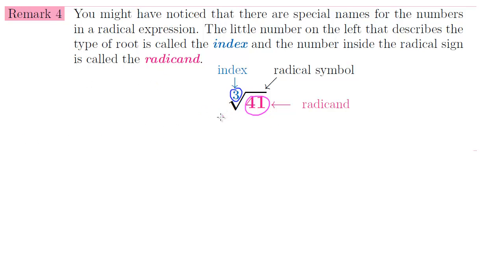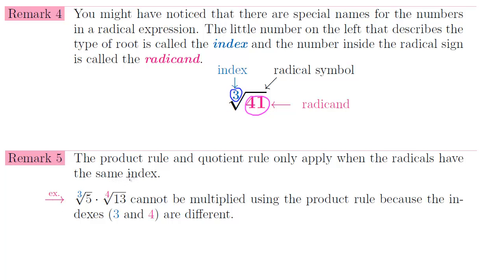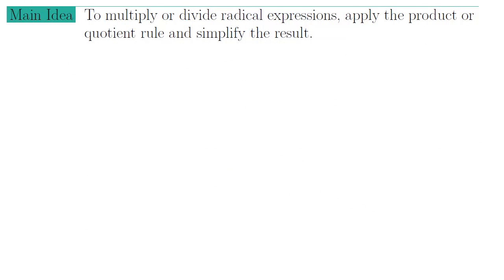There is an important point about the product and quotient rules: they only apply when you have the same index on your radicals. For example, you cannot multiply the cube root of 5 and the fourth root of 13 because they don't have the same index. The main idea for this topic is: to multiply or divide radical expressions, apply the product or quotient rule and then simplify the result. In order to apply these rules you must have the same index, and your final answer should always be in simplified form.